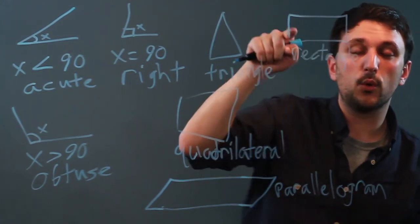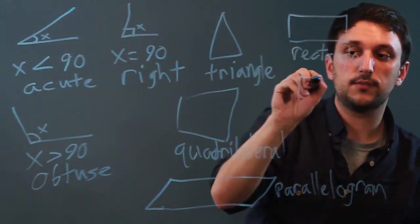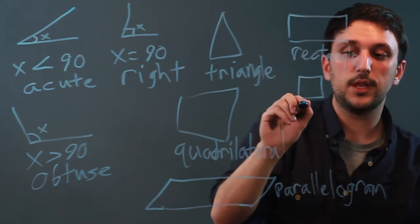If the four right angles and two parallel lines, if the sides are all equal, then it's a square.